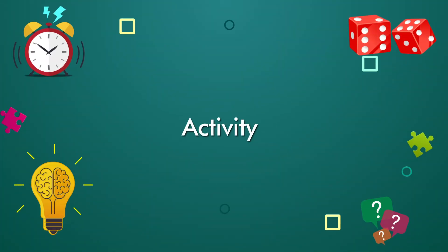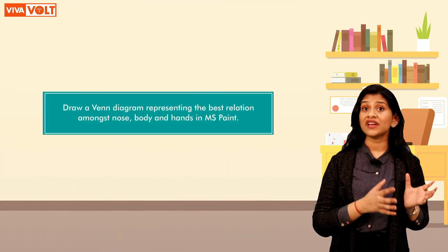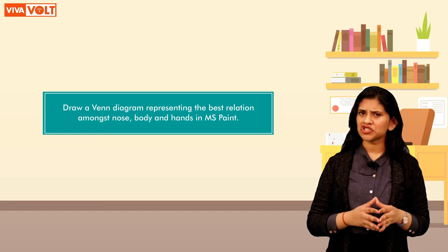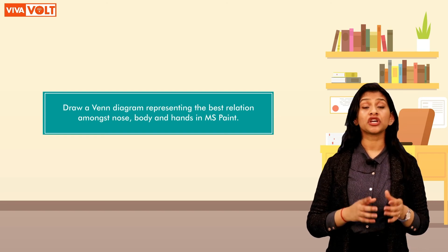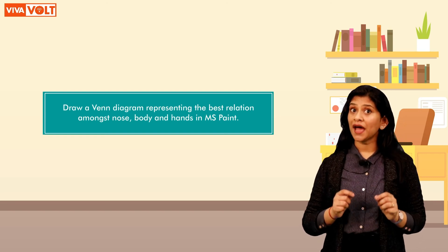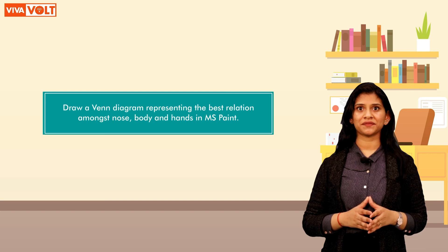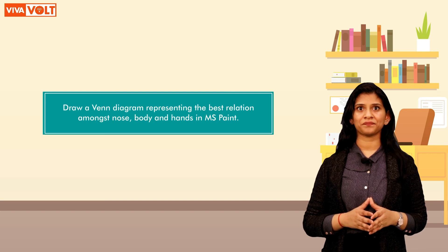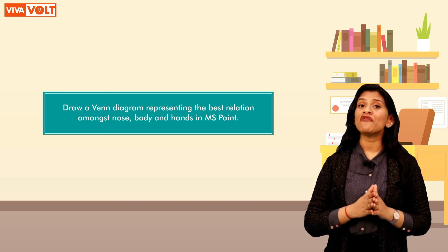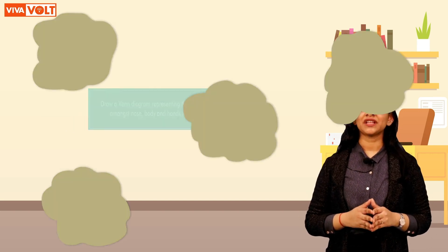Here is an activity for you now. Draw a Venn diagram representing the best relation amongst nose, body and hands in MS Paint. I hope you understood the concept of Venn diagrams. This is all for today. I will see you soon with a new concept.